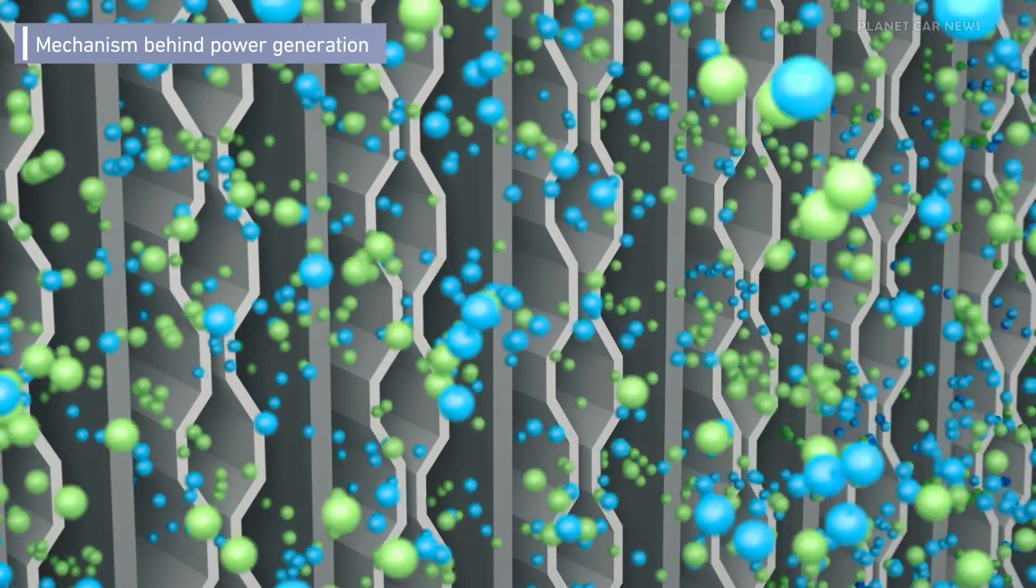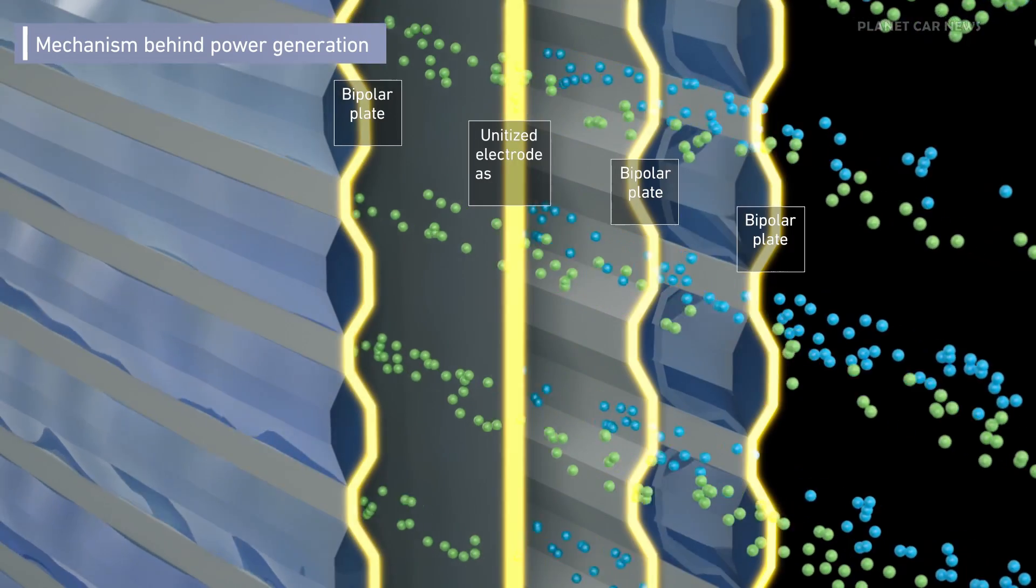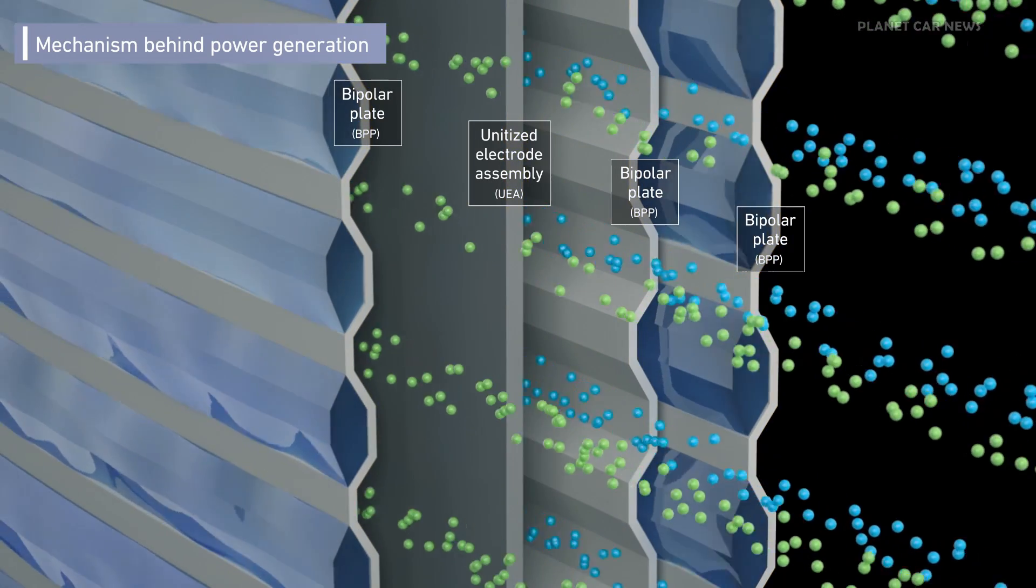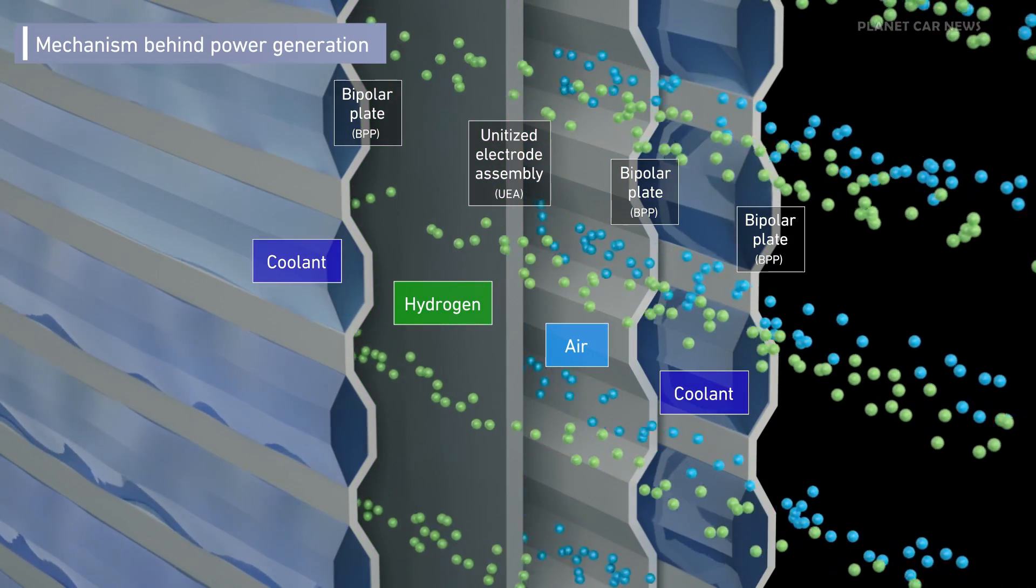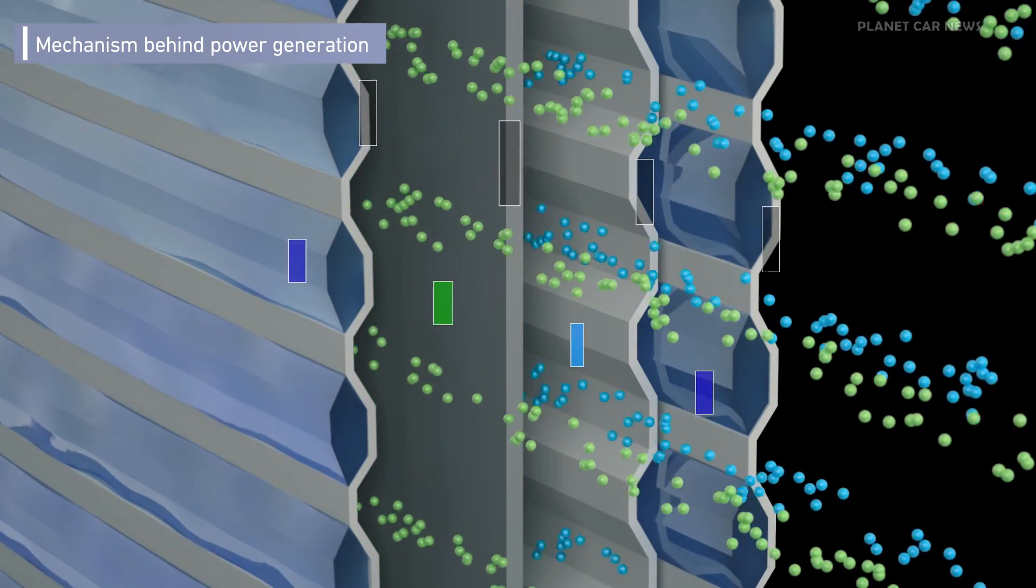Hydrogen and air flow inside the stack on both sides of the unitized electrode assembly, and the heat generated during power generation is removed by the cooling water inside the bipolar plates.